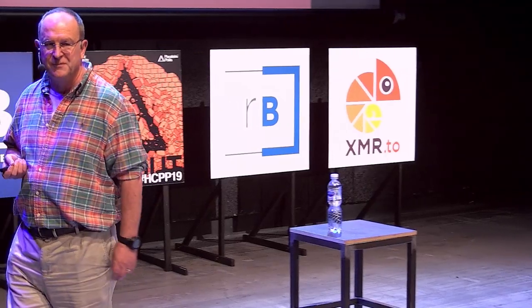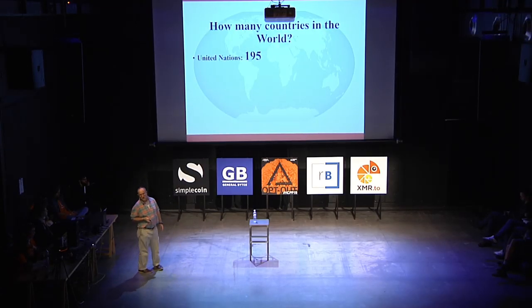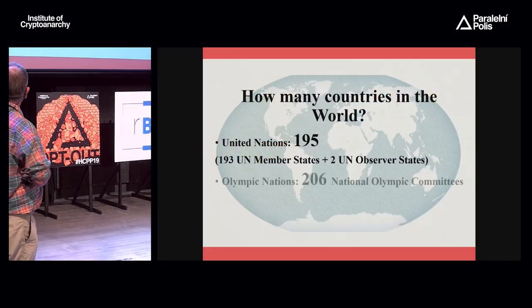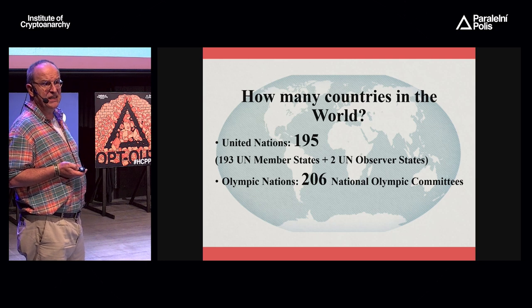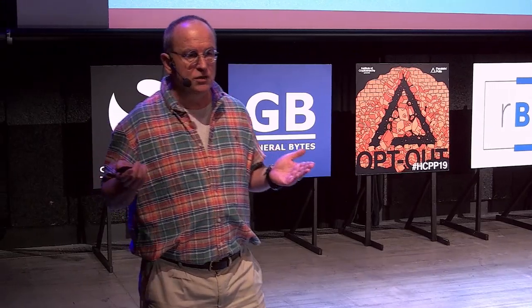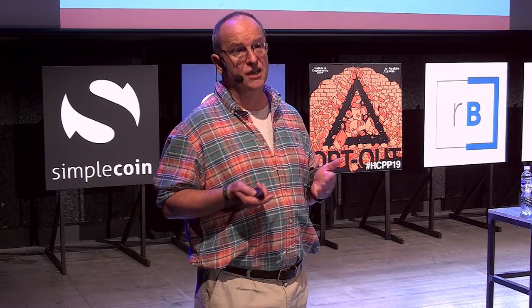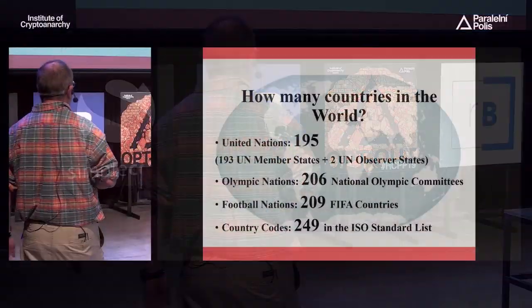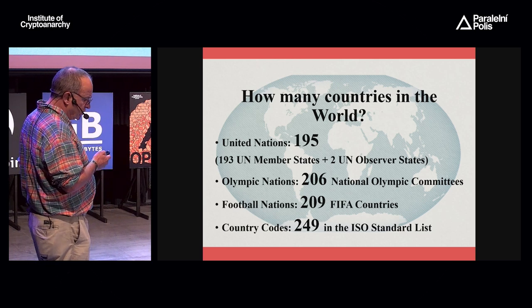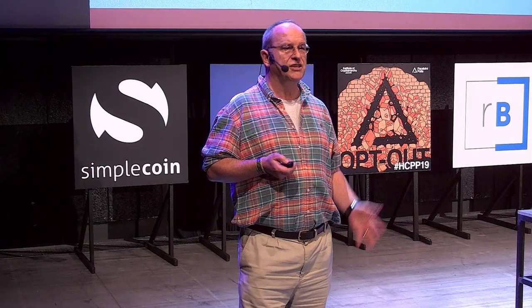How many countries are there? As a geographer I should be able to answer it, but it's surprisingly difficult. There are 193 UN member states plus two UN observer states. However, there are 206 Olympic nations, 209 FIFA countries, and no fewer than 249 country codes in the ISO — the International Standards Organization. So the question of how many countries there are is actually surprisingly difficult to answer.